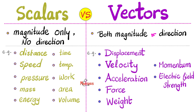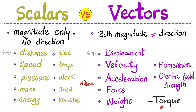Scalars versus vectors: scalars have magnitude only, vectors have magnitude and direction. Examples of scalars — distance, like 5 meters. But displacement, 5 meters east, is a vector. Speed — driving 10 kilometers per hour, that's scalar. Mnemonic: speed is scalar. But velocity is a vector — like 15 kilometers per hour east. Pressure, like blood pressure, does not have a direction, so it is scalar. Mass is scalar. But weight depends on gravity, so weight has a direction — downwards — which means it's a vector. Energy is the ability to do work; both energy and work are scalar. But torque is a vector. Torque and momentum are both vectors. Force, like gravitational force, has a direction.